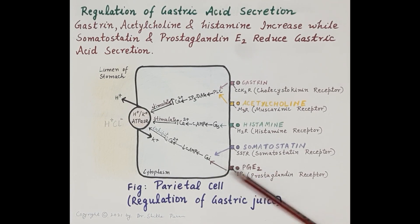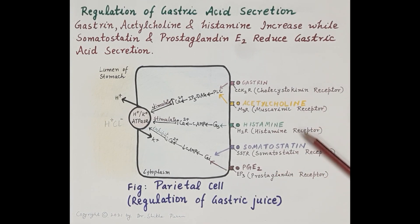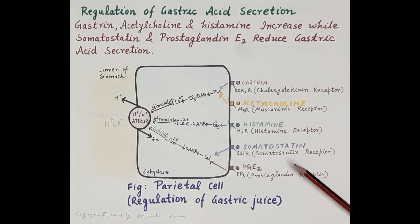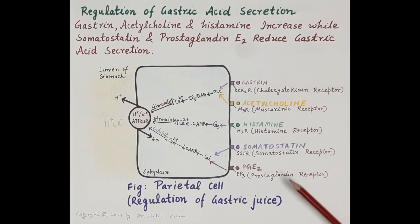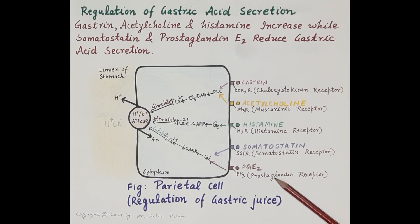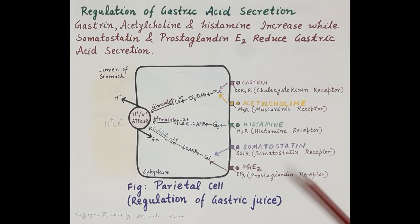In order to understand the regulation of gastric acid secretion, we will first recapitulate in brief the mechanism by which gastric acid is produced by the parietal cells, and then we'll discuss how these secretions stimulate or inhibit the parietal cells, thereby regulating the secretion of gastric acid.